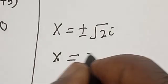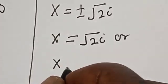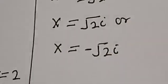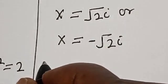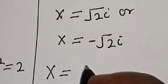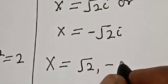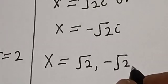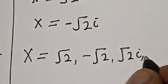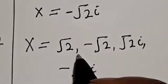So x is equal to root 2 i, or x is equal to minus root 2 i. Our final answers are: x = √2, x = −√2, x = √2 i, and x = −√2 i. That is the value of x.